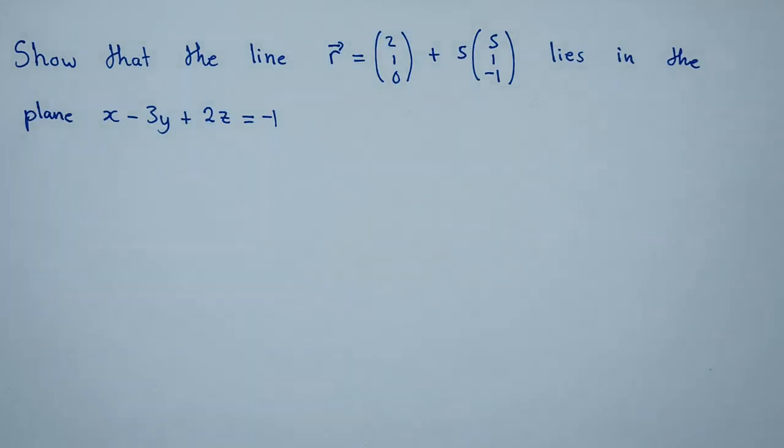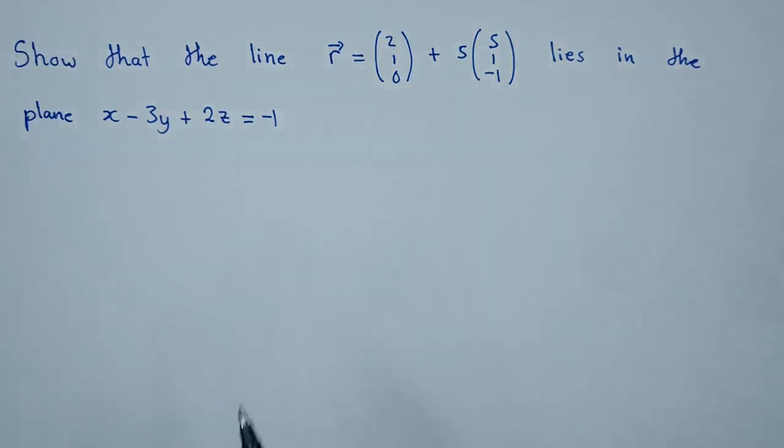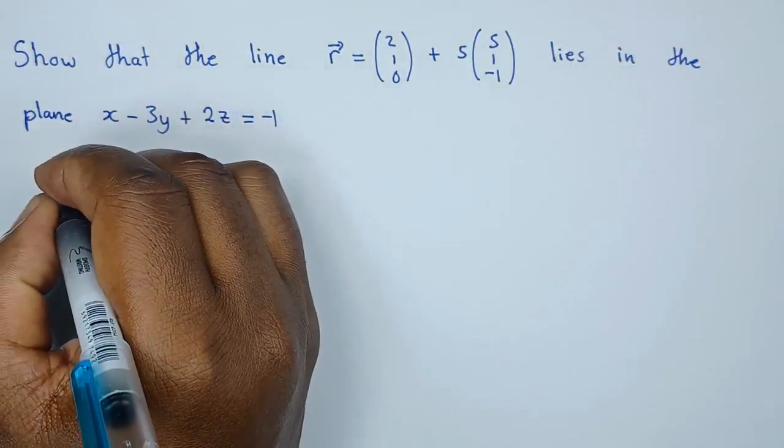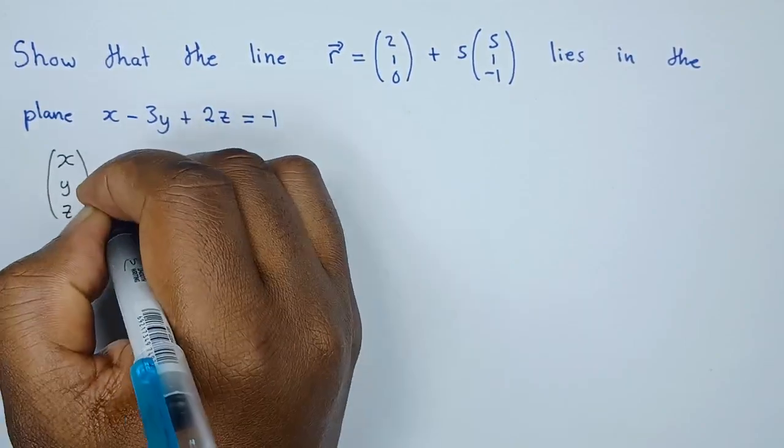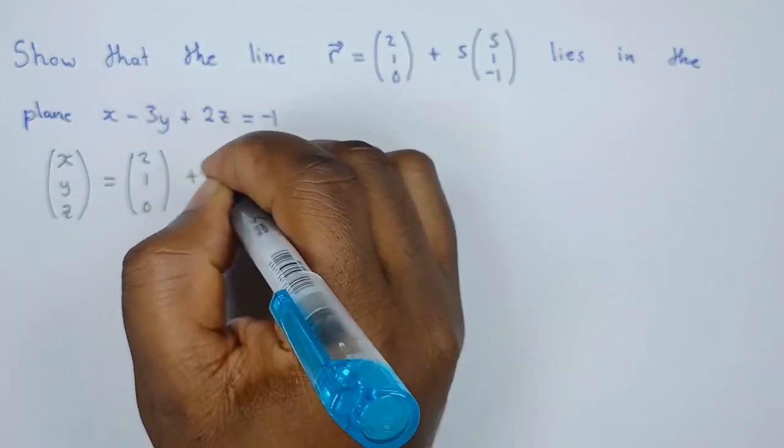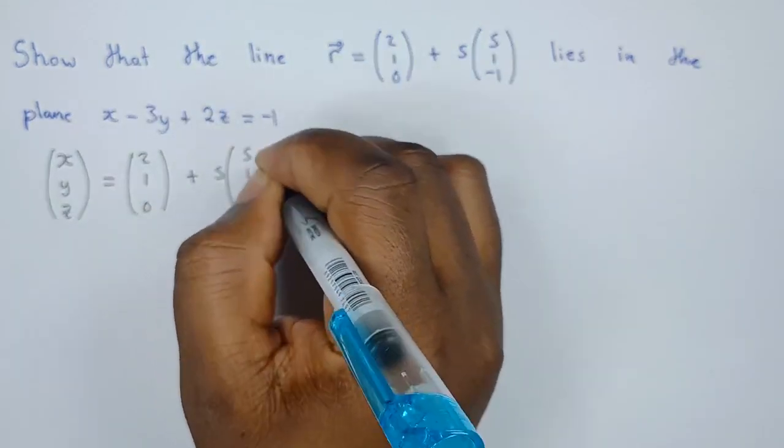What we need to do is first convert the line from vector form to parametric form. It's important to note that this vector can be represented as (x, y, z) equals (2, 1, 0) plus s times (5, 1, -1).